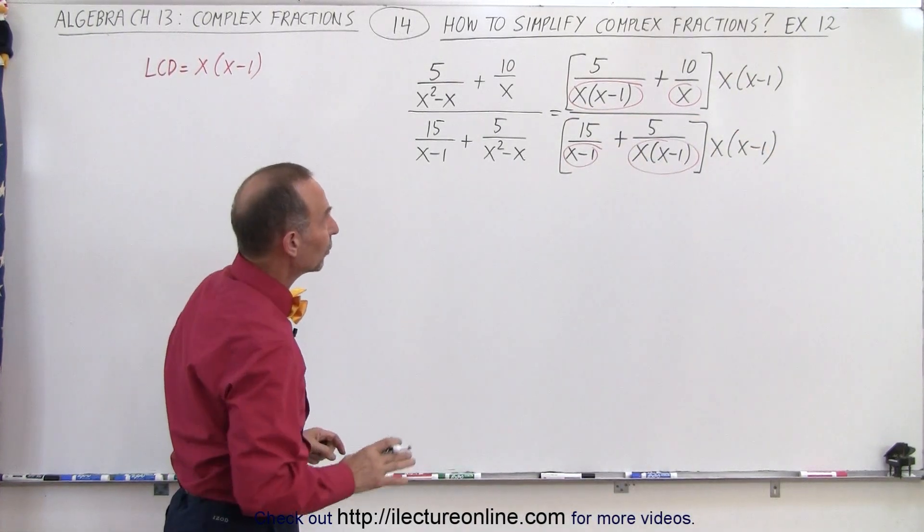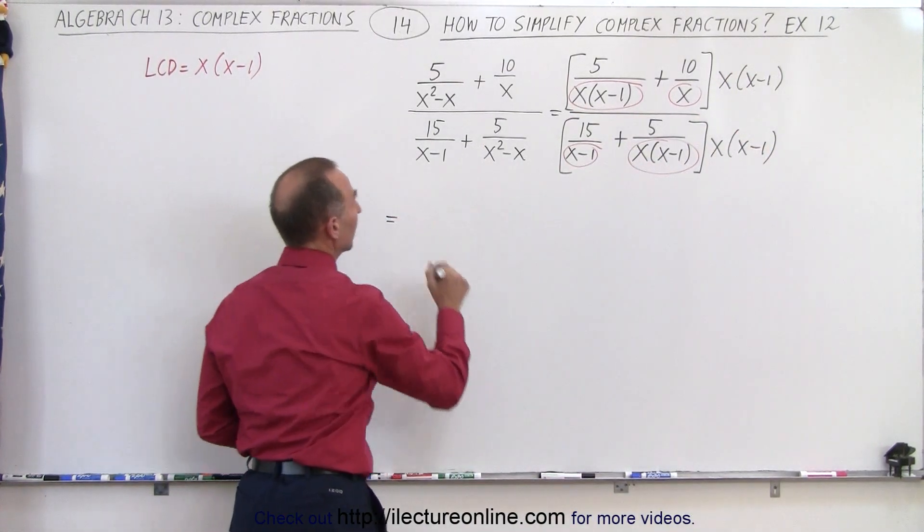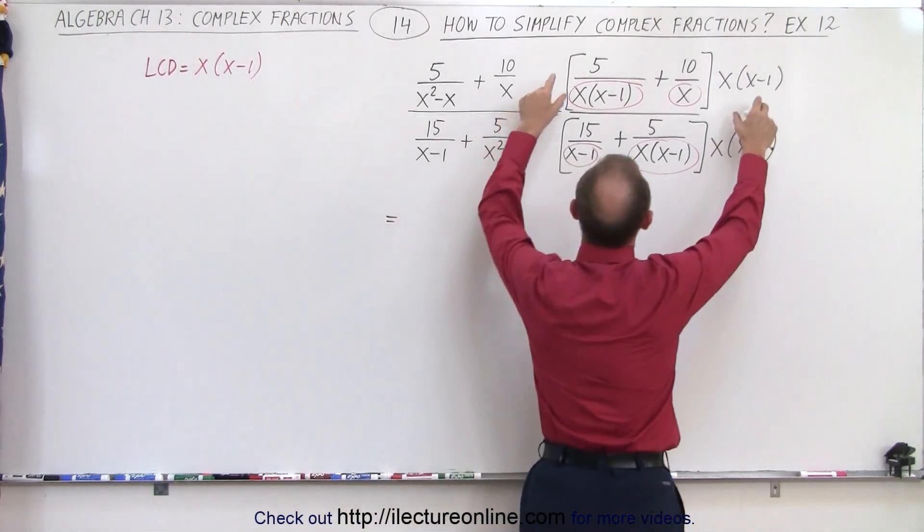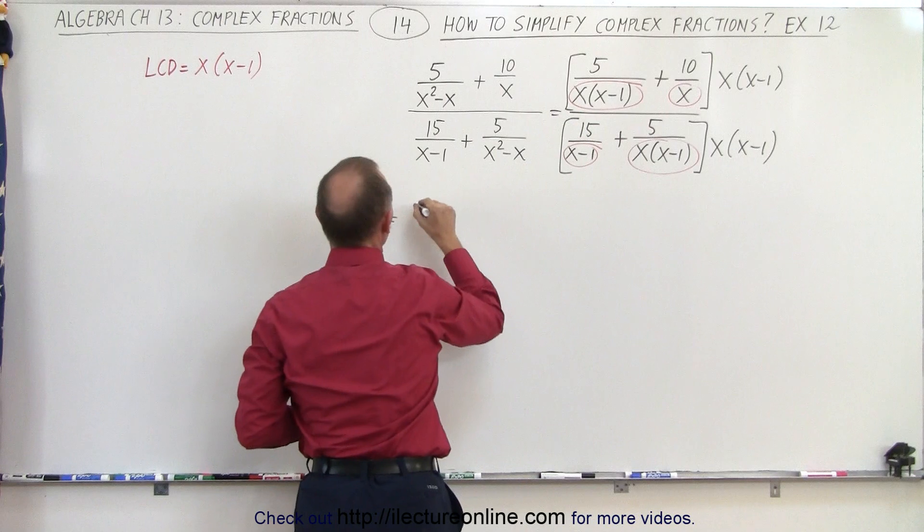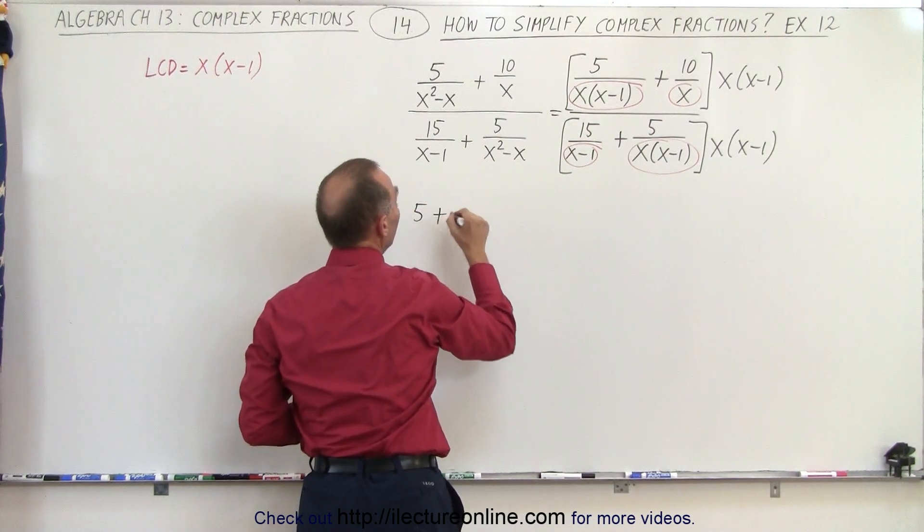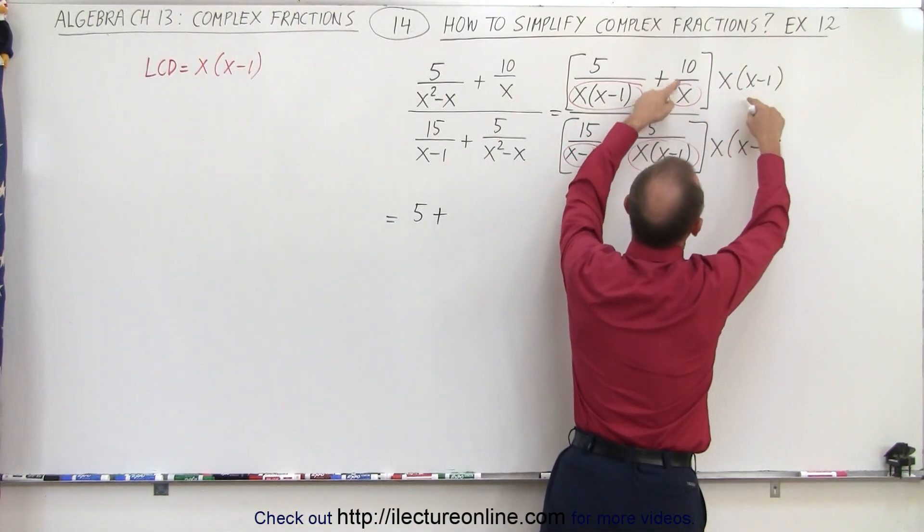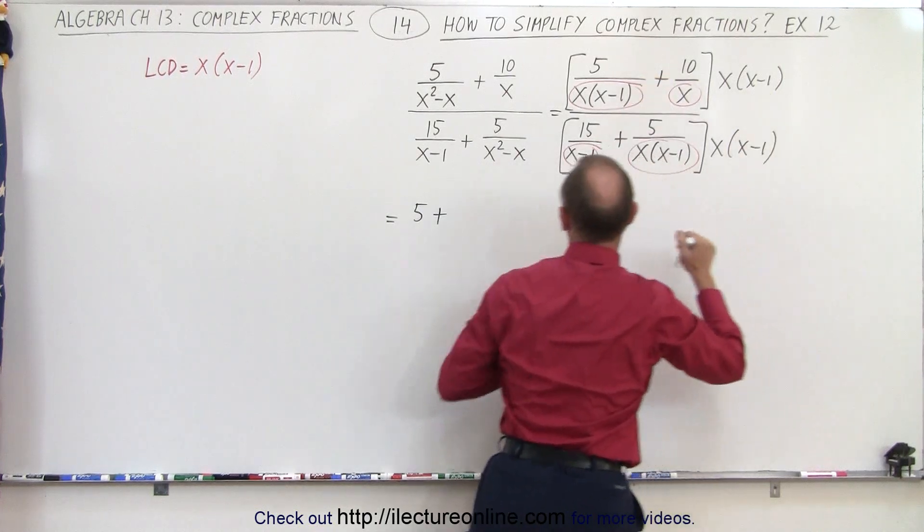Alright, when we multiply these out, what do we get? So here notice that we multiply this times this, the x times x minus 1 cancel, and we're just left with a 5. Plus, here when we multiply these out, the x's cancel, and we're left with 10 times x minus 1.